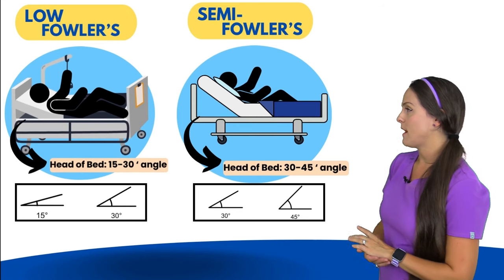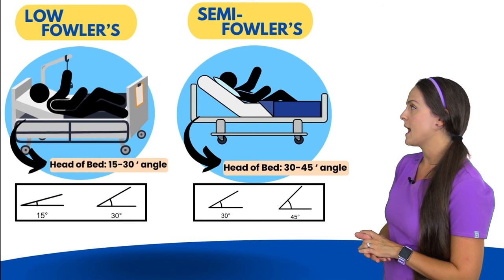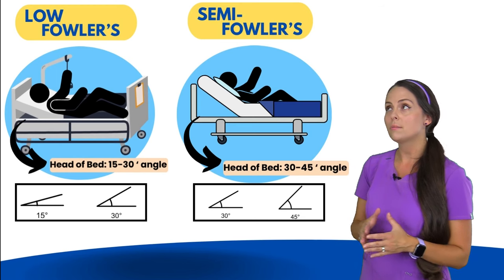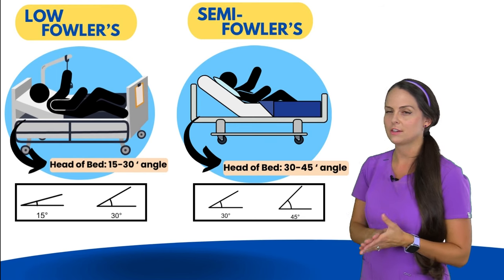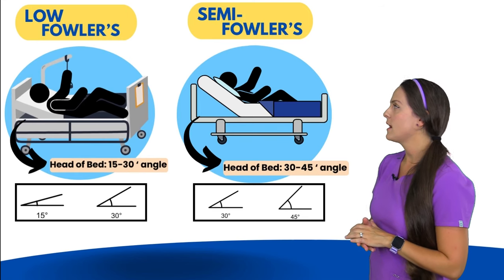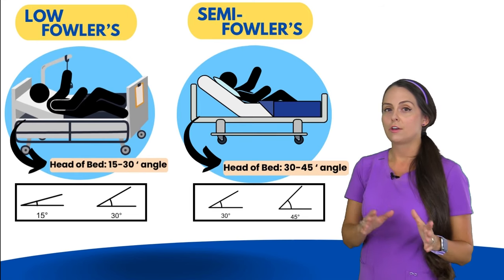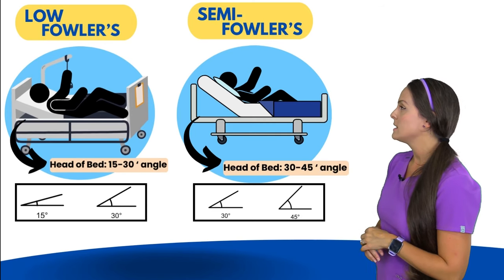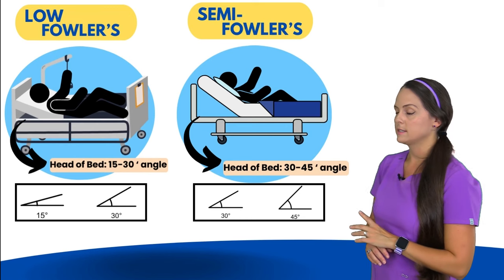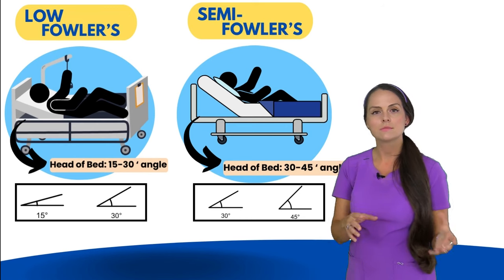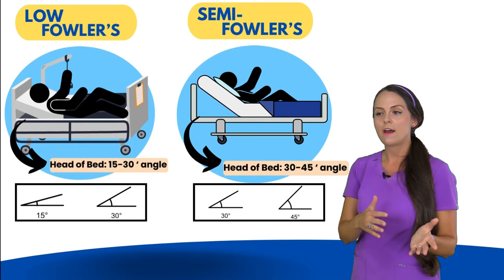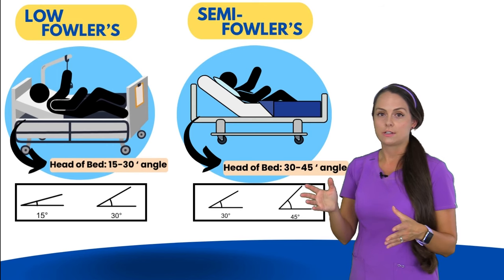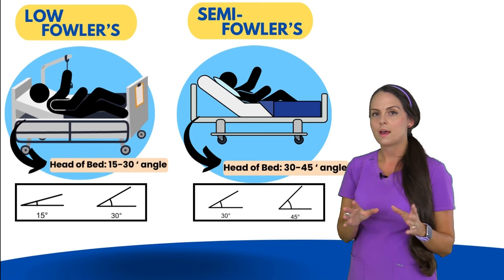First we have low Fowler's, and with low Fowler's the head of the bed is about 15 to 30 degrees — so it's almost supine, but with a little slight elevation. Then we have semi Fowler's, which is higher than low Fowler's. With semi Fowler's, the head of the bed is at an angle of 30 to 45 degrees. It's important to note that some sources group low Fowler's and semi Fowler's together and just say semi Fowler's is the head of the bed up to 30 degrees, so just keep that in mind while studying.